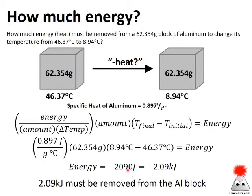This is one of those potentially ambiguous sig fig numbers — is that zero significant or not? Looking back, 0.897 is only three sig figs, and all terms have three sig figs, so this is a three sig fig number. That zero is not significant, so there's no decimal point after it. It might be less ambiguous to report that as negative 2.09 kilojoules.